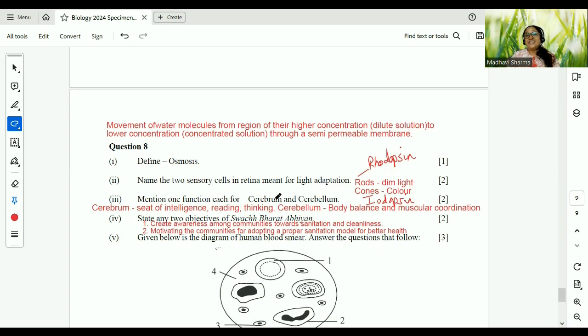One function each. Cerebrum and cerebellum. Cerebrum, seat of intelligence, reading, thinking, memory. Cerebellum, body balance and muscular coordination. Children, please please please study this word-to-word from your textbook. Two objectives of Swachh Bharat Abhiyan. We all know this by now. Create an awareness among communities towards sanitation and cleanliness. Motivating, of course, these communities for adopting a proper sanitation model for better health. You can write anything from your textbook. Don't worry. I think this is the last question because it's question 8.